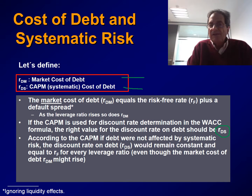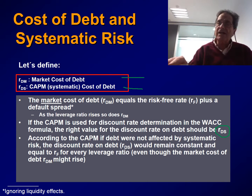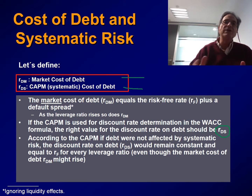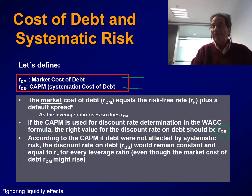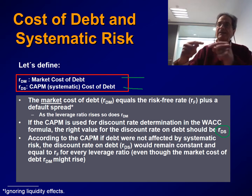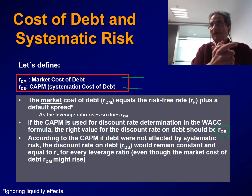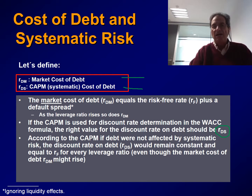According to the CAPM, if the debt is not affected by systematic risk, the discount rate on debt — RDS — would remain constant and equal to the risk-free rate RF for every leverage ratio, assuming that as we increase the leverage ratio, systematic risk of the debt remains at zero, so beta equals zero. However, it is perfectly possible that as we increase leverage, the systematic risk of debt remains at zero but the market cost of debt increases because the probability of default increases. So there will be a substantial difference between RDM and RDS as leverage rises.